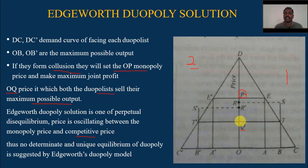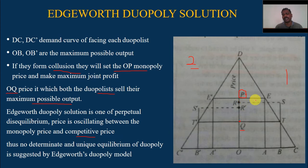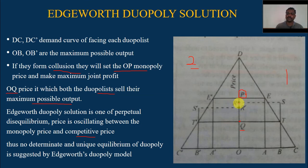However, this is not an equilibrium. One of the two producers, thinking the rival will keep his price fixed, will go ahead and increase his price back to the monopoly price OP to gain maximum profit. Then the other producer — say Producer 2 — again thinks his rival will remain at that price, and sets his price slightly below the current selling price.